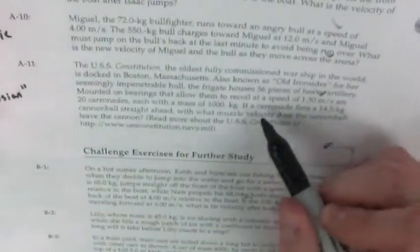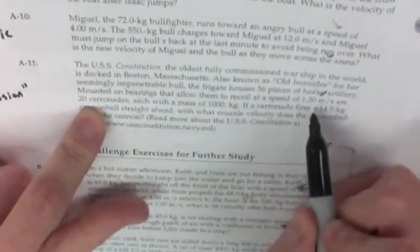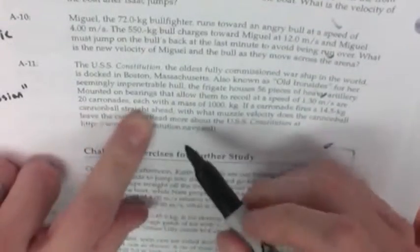Recoiling is what the cannon does when it fires. It's going to pull back at a speed of 1.3 meters per second. Mounted on those bearings that allow them to recoil at speed are 20 carronades, each with a mass of 1,000 kilograms.